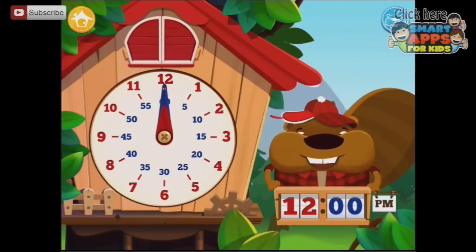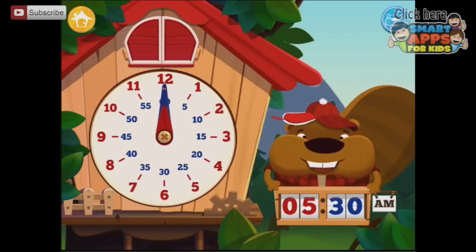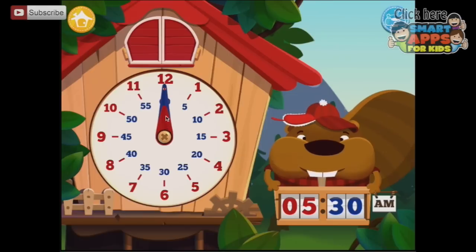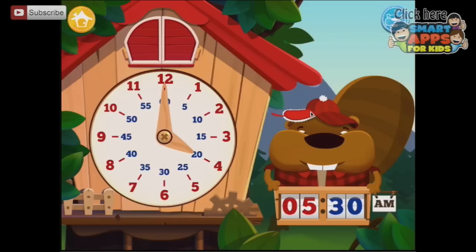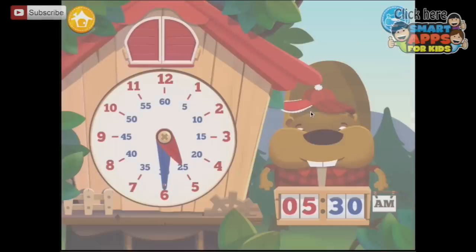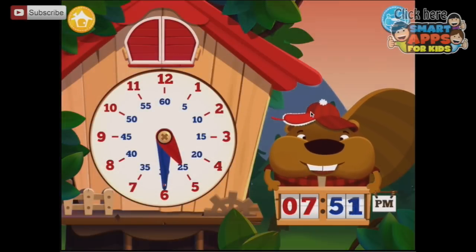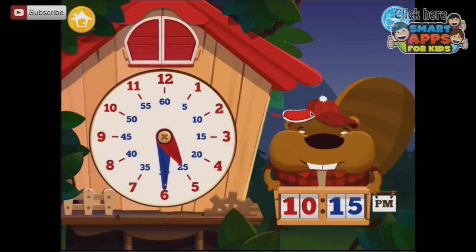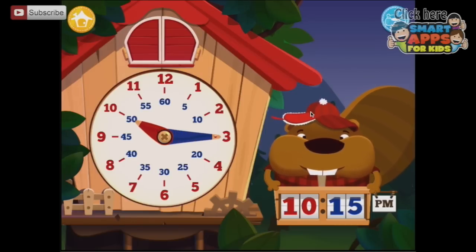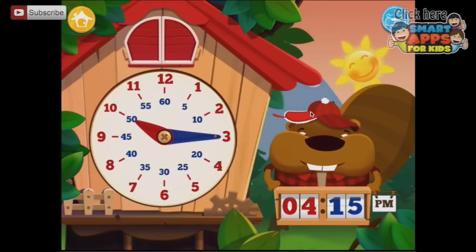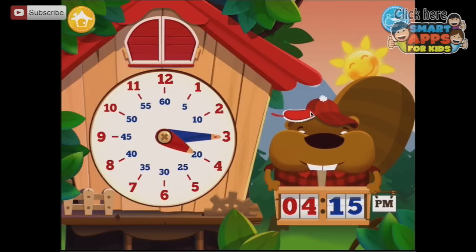Set the hour to 5:30 AM. Okay, so they've made the hours red like the red hand, and the minutes blue like the blue hand. Alright, so we need to put the red hand, the hour hand on 5, and the blue hand on 30. Set the hour to 10:15 PM. So we set the hour hand to 10 and the minute hand to 15. Set the hour to 4:15 PM. The minute hand to 4, and the other hand was on the right space.